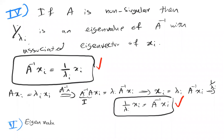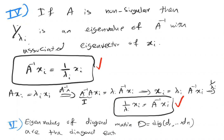Property 5: the eigenvalues of a diagonal matrix D with diagonal entries d₁ to dₙ are simply those diagonal entries. So λ₁ = d₁, λ₂ = d₂, …, λₙ = dₙ.